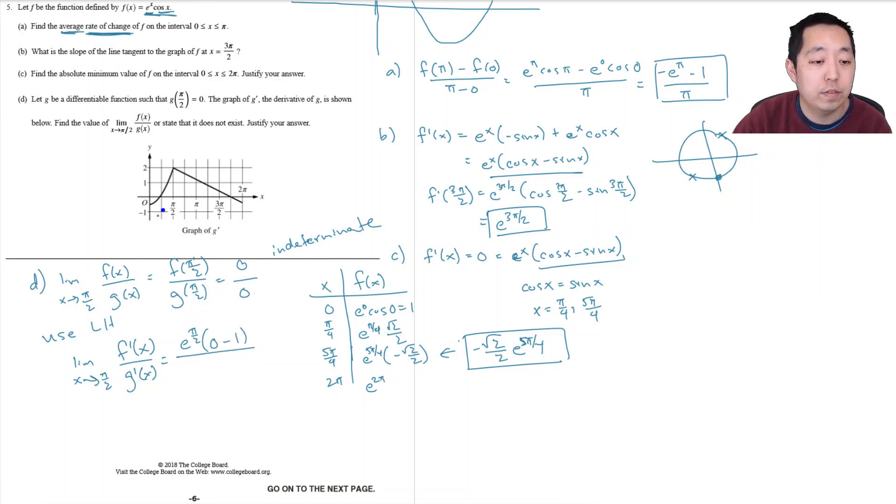And then the derivative, when I plug, approach pi over 2 for g prime, this is a graph of g prime. When I approach pi over 2, I approach 2, because from the left and the right it approaches 2.